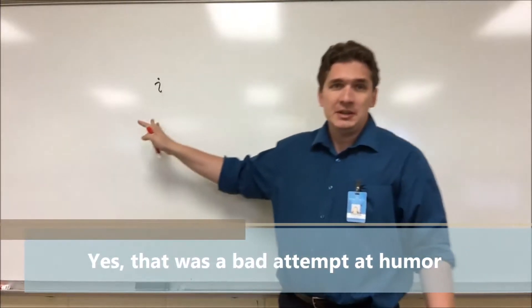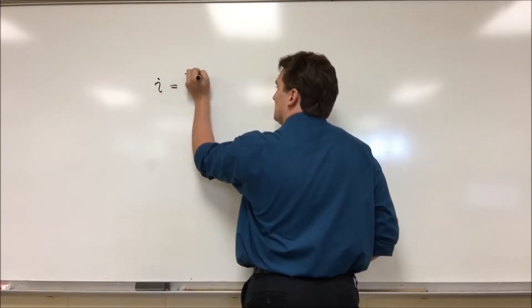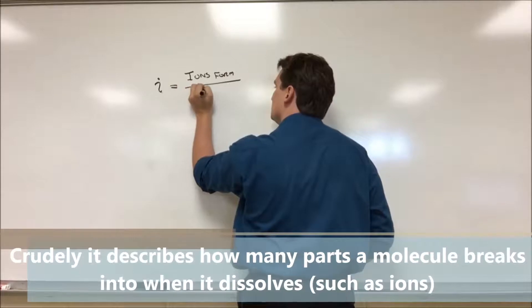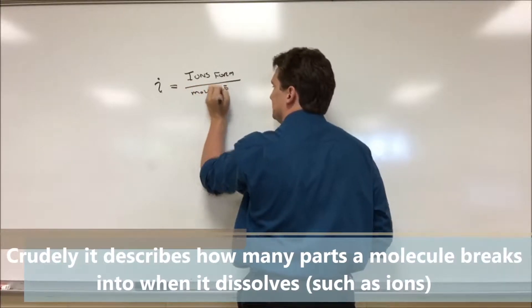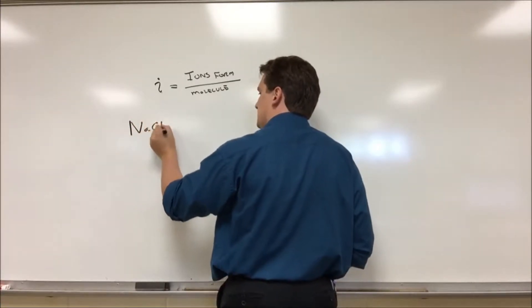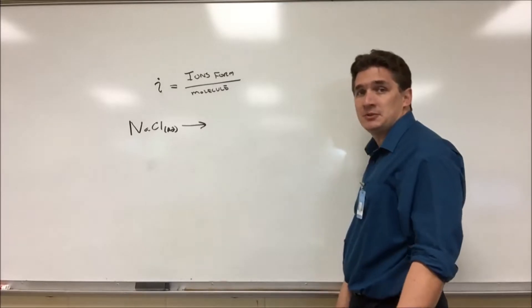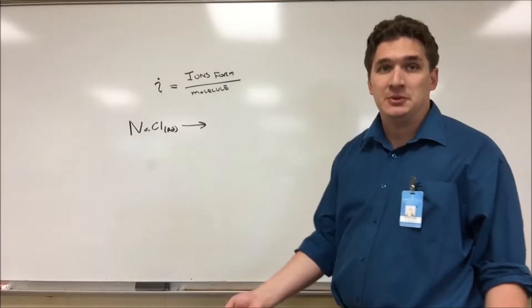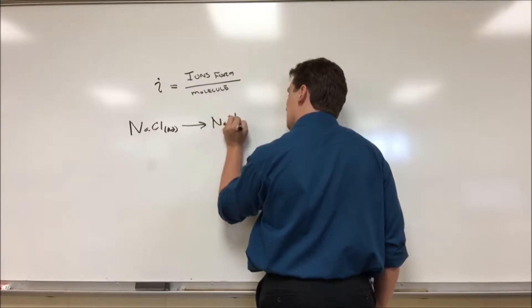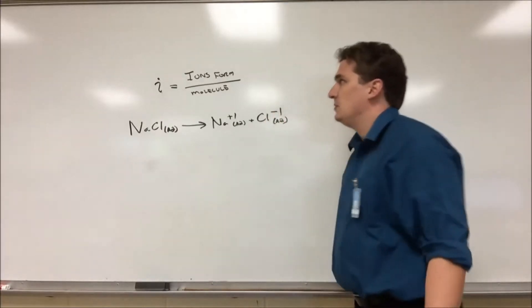When we're looking at a Van't Hoff factor, what we're saying is we want to know how many ions we form for every molecule we throw into solution. So let's say we have something like sodium chloride NaCl. We chunk this into water, and from your solubility rules or at least from experience, table salt dissolves really well in water. We get Na plus one and Cl minus one, both aqueous dissolved in water.